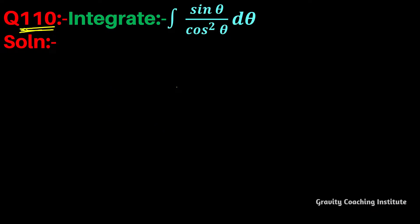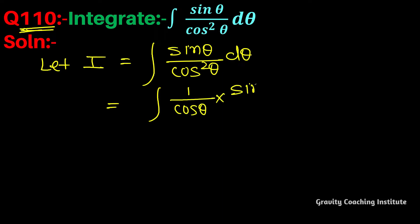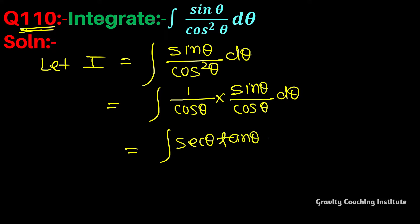Question number 110: integrate sin θ / cos²θ dθ. Let I equal to integration of sin θ upon cos²θ dθ, which can be written as 1 upon cos θ into sin θ upon cos θ, that is integration of sec θ into tan θ dθ. The integration of sec θ tan θ is sec θ + C.